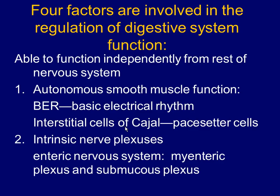The digestive system is regulated by four controllers, subdivided into intrinsic and extrinsic. Intrinsic means the GI tract controls itself; extrinsic means the brain or endocrine system is involved. First is autonomous smooth muscle function — intrinsic control. When food is put in the GI tract, it instinctively moves the food on its own.